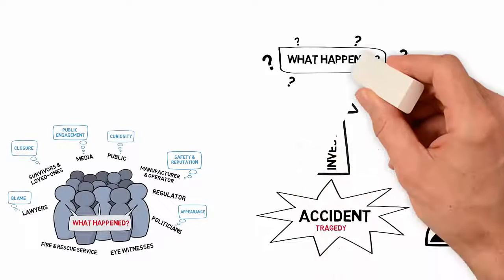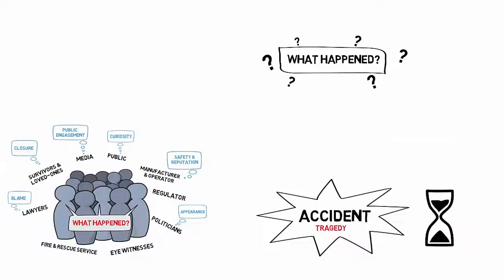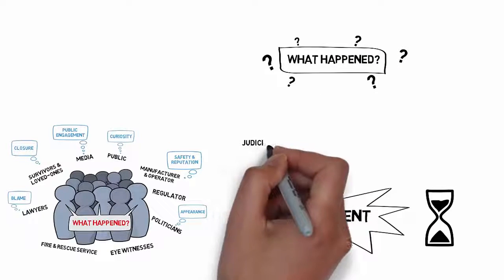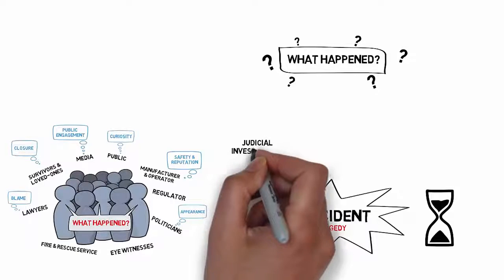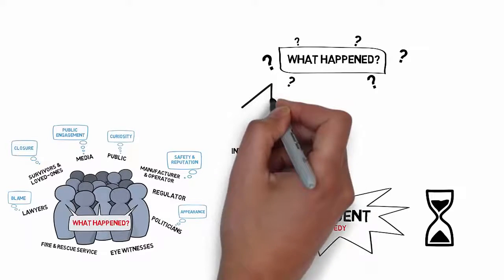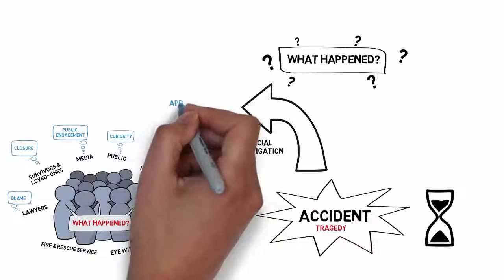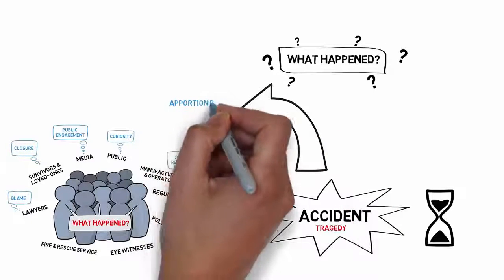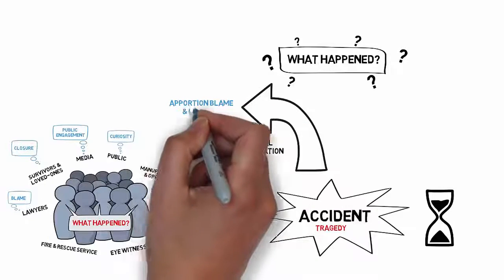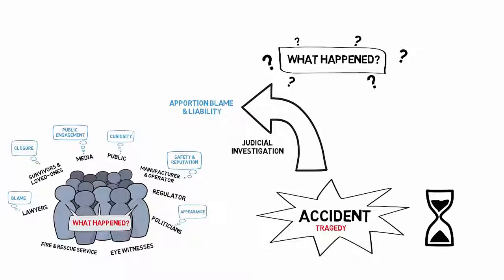For this reason, rather than one single investigation, two different investigations are conducted. A judicial investigation looks at what happened from the motive of apportioning blame or liability. It seeks to look back and see who is at fault.